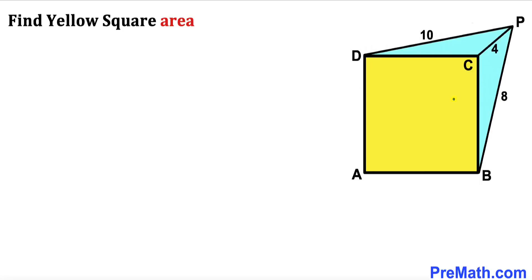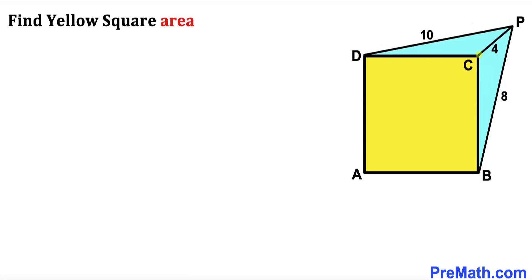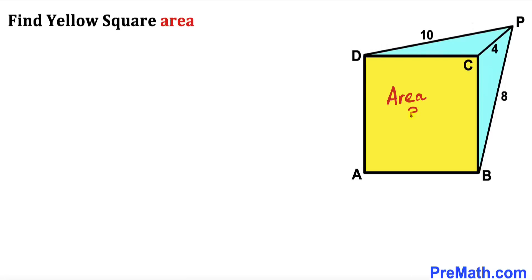Welcome to pre-math. In this video we have got this yellow square ABCD along with this external point P, such that this distance DP is 10 units, the distance PC is 4 units, and this distance BP is 8. Our task is to calculate the area of this yellow shaded square ABCD.